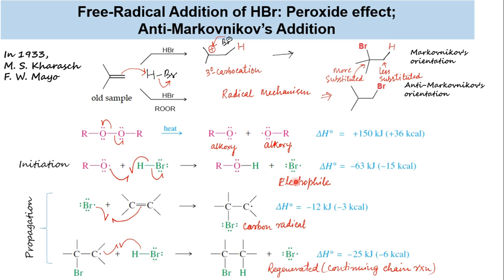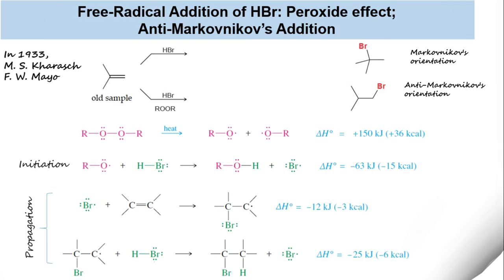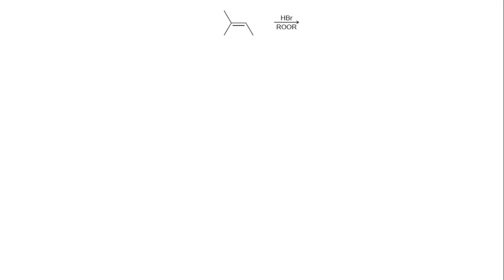Notice that bromine radical is the electron-deficient electrophile which adds to the alkene in this peroxide-mediated radical mechanism, compared to H-positive, or the proton, which serves as the electrophile in the absence of peroxide. Let us check why anti-Markovnikov's orientation is observed in the presence of peroxide.